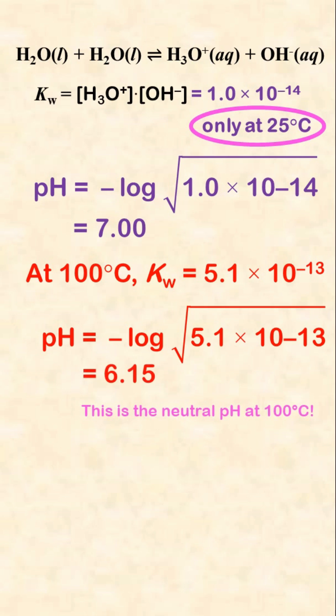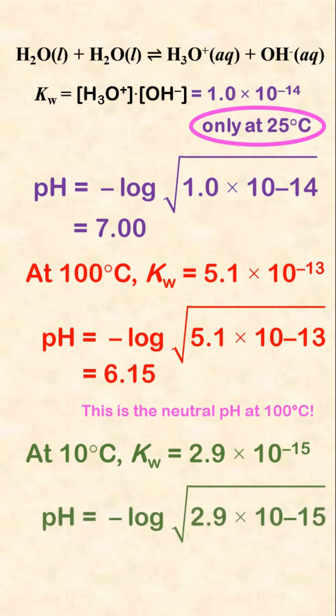If the temperature drops to 10 degrees Celsius, Kw is now 2.9 times 10 to the negative 15th. So at that colder temperature, the pH of the same neutral distilled water is now 7.27.